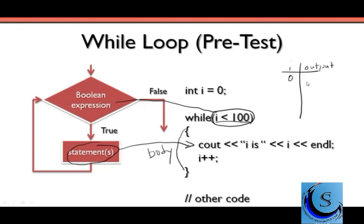So we'd have a cout, and we'd have i is zero. Then we'd increment the value of i. So now i is one, and we would come back — once there are no other statements left to execute inside the body — we'd come back to the top and test this boolean expression again to see if i is still less than 100. Since i is one, it's still less than 100, and we'll come back into the body and do this statement again, except this time we'll have i is one.